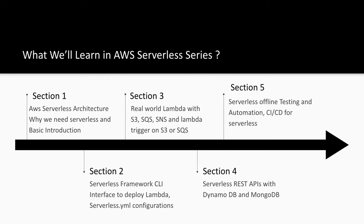Then the most important thing is testing these Lambdas offline. There is a serverless offline plugin, and we are going to talk about testing it offline and then integrating the whole thing with the CI/CD pipeline. We don't need to do anything manual — we just focus on writing the Lambda function on our local system. When we just run SLS deploy, everything is taken care of, either through the pipeline or through commits and PRs. So let's get started.